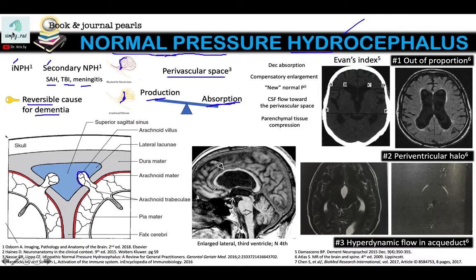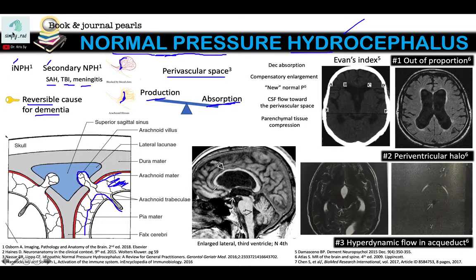Going back to our anatomy: this is your arachnoid matter, this is your subarachnoid space. In the subarachnoid space you have blood vessels traversing that area, including small blood vessels which penetrate the parenchyma, bringing along with them a portion of the pia mater.